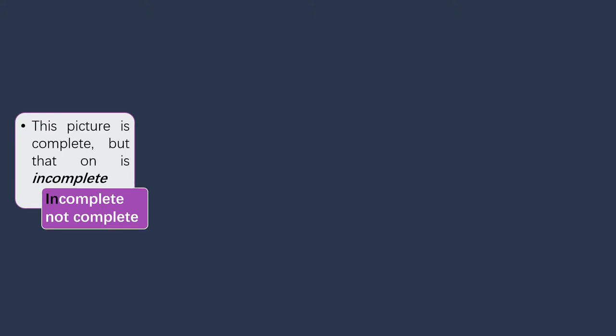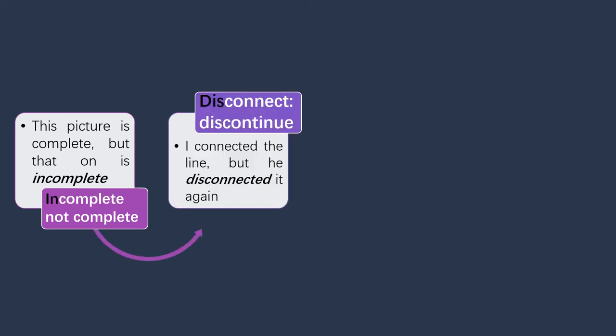The first two examples: 'This picture is complete, but that one is incomplete.' There we added the prefix 'in' to 'complete' and it became 'incomplete,' meaning that picture is not complete. Another example: 'I connected the lane, but he disconnected it again.' Here the prefix 'dis' is added at the beginning of 'connect' and it became 'disconnected,' meaning to undo the connection.